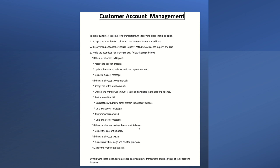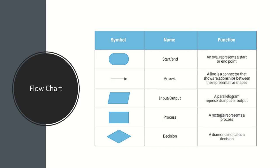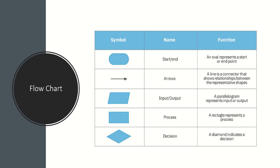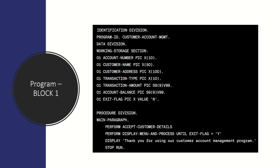If the withdrawal is valid, deduct the amount from the account balance and display a success message; if not valid, display an error message. If the user chooses to view the account balance, display it. If the user chooses to exit, then exit. This is a simple scenario for customer account management in a banking product. Based on this, I'm going to write a COBOL program. You may receive requirements this way or as a flowchart showing inputs, outputs, decisions, and processing steps.